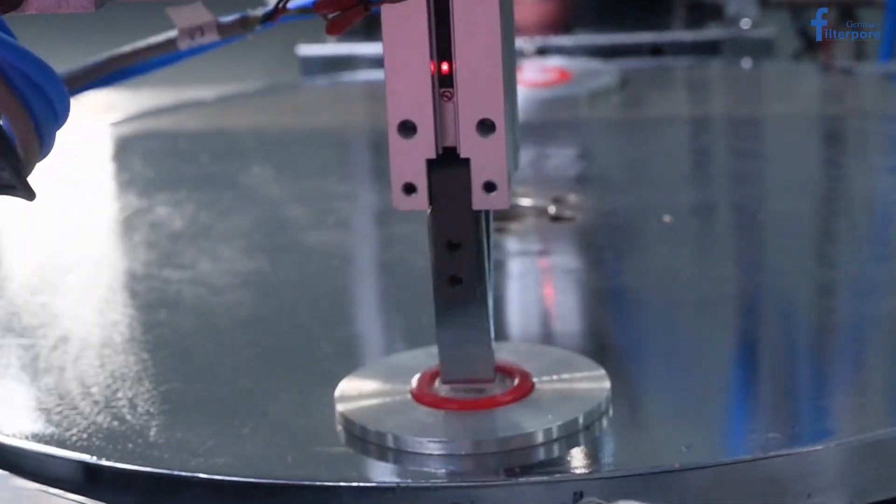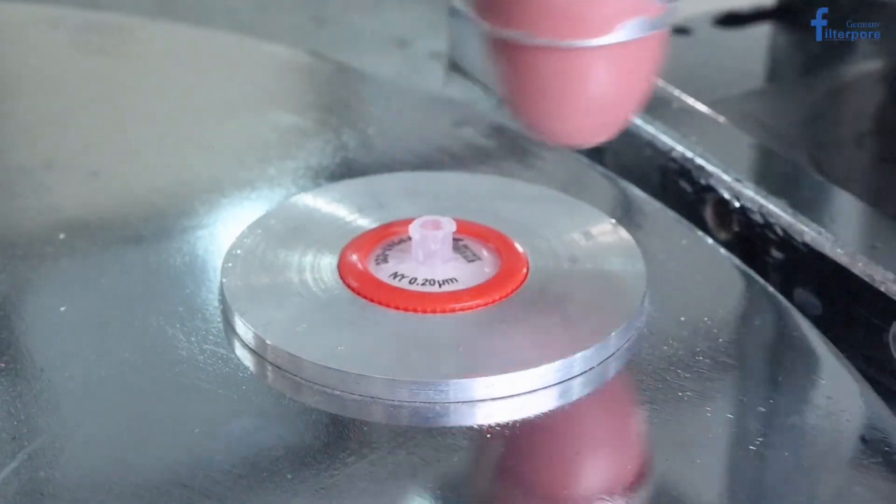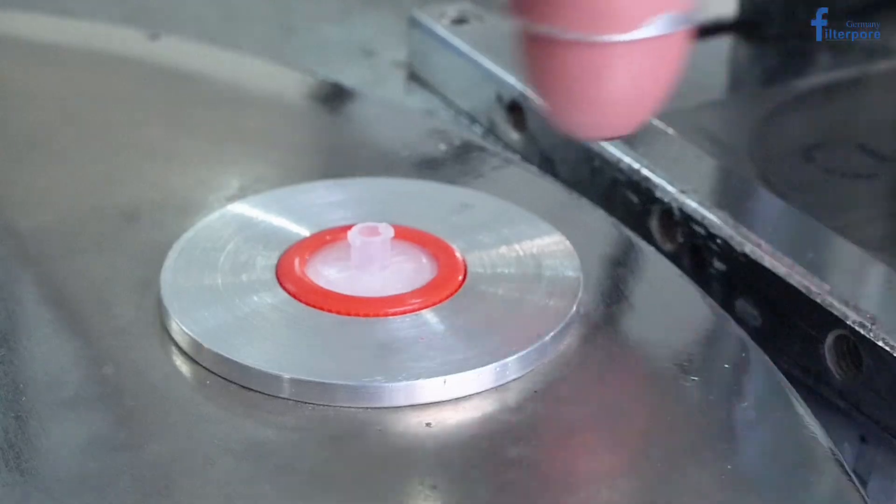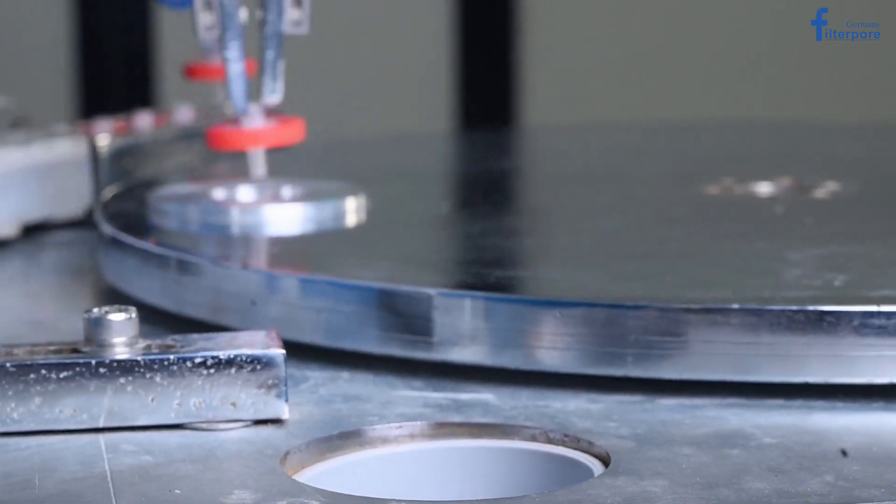FilterPour offers membranes from materials like PTFE, nylon, PVDF, PES, glass fiber, and others, each tailored for specific liquid purification tasks.